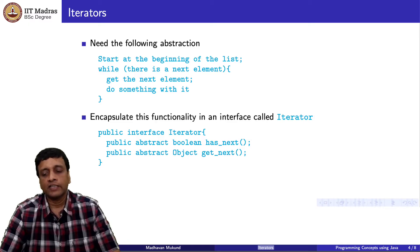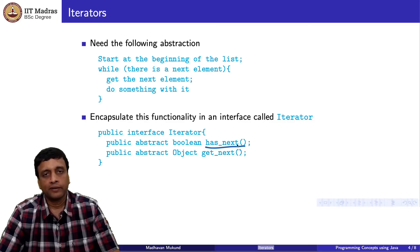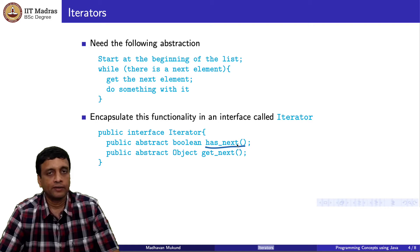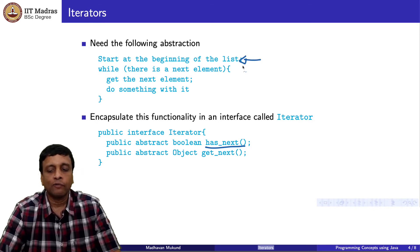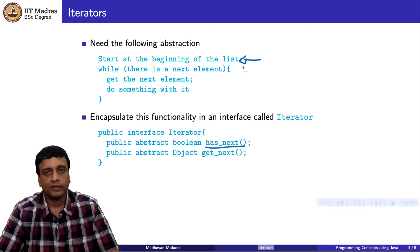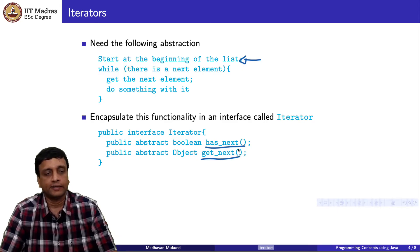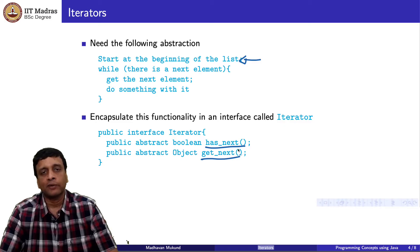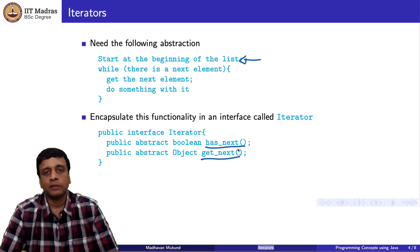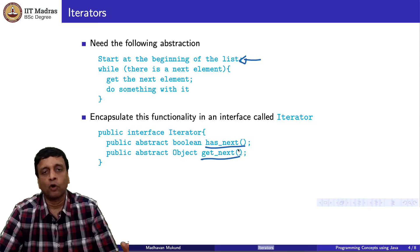We can define an interface called an iterator which has two functions. The first is hasNext, which tells me whether or not there is one more element. For an empty list, hasNext will be false right at the beginning because there is no first element. As long as hasNext is true, I can call getNext and get an object. So we have these two functions: one which tells me whether I am at the end of the list, and one which gets me the next value in the list if I am not at the end.